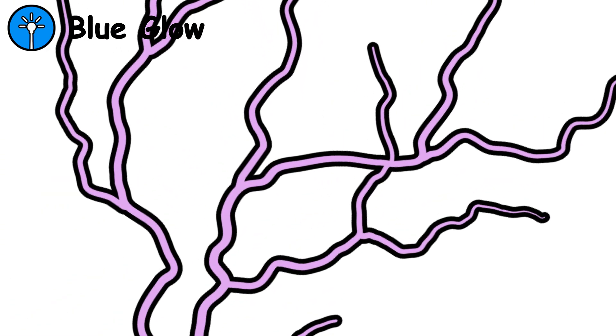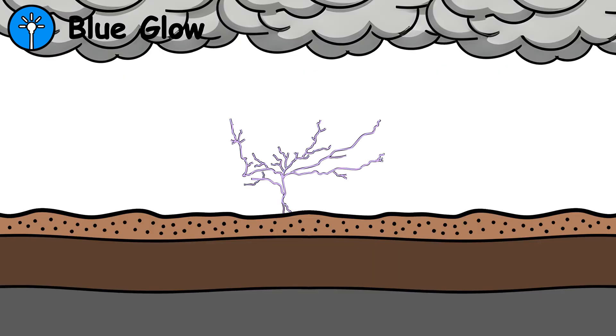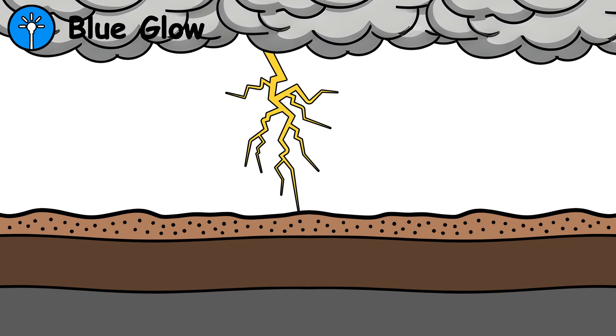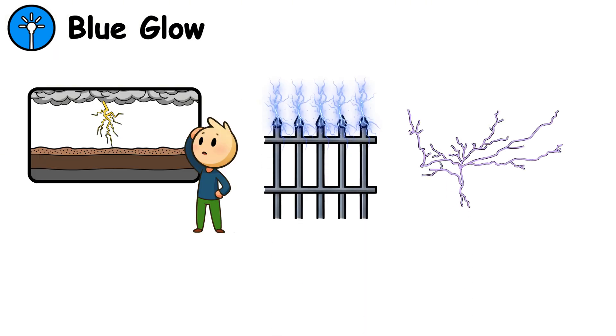In other words, microstreamers are thin threads of ionized air that begin rising from the ground, searching for a connection to the cloud. When those threads link up with a downward leader from the storm, a lightning bolt completes the circuit. If you ever see this blue glow or faint upward sparks, it means a strike could happen within seconds.